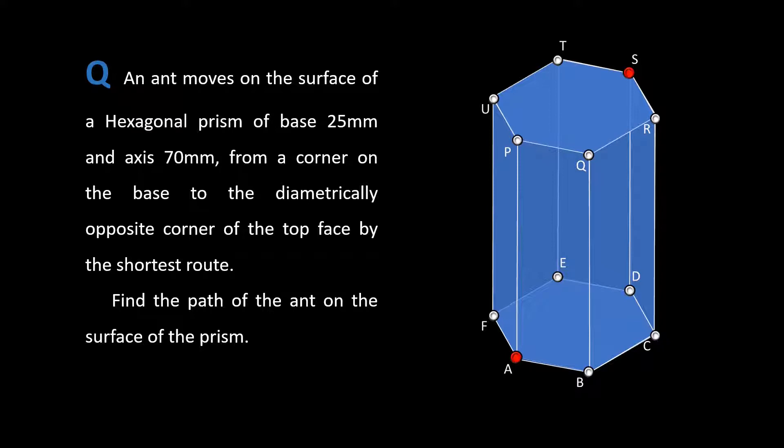Suppose the ant starts moving from corner A. We can take any corner on the base. If A is the starting point, the diametrically opposite corner on top face will be the corner S.